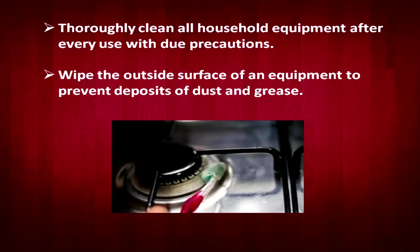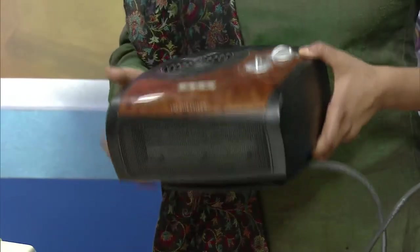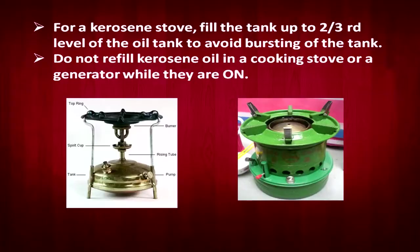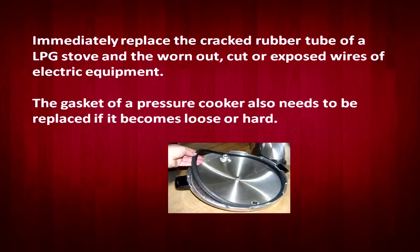Thoroughly clean all household equipment regularly. For a running fan, do not put your hand near it and clean it regularly to prevent dust and grease buildup, as dust and grease can catch fire easily. Do not clean equipment while it is on or functioning. Immediately replace cracked rubber gaskets in a pressure cooker, exposed wires, broken buttons or tubes — whether in a stove or electrical equipment — do not use them again without replacing. Never use cut or exposed wire in electrical equipment.